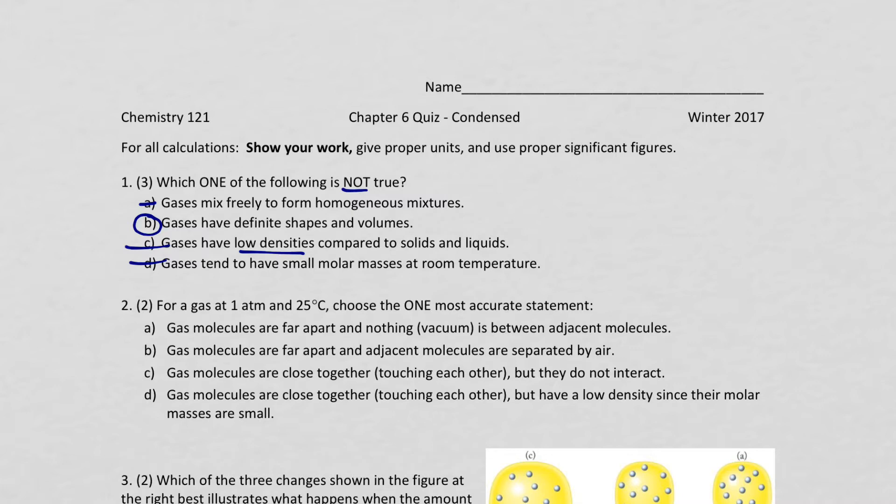And by the way, tend to have small molar masses. Well, if we look at H2 gas, that's a molar mass of about 2 grams per mole. So it's not too bad. So it's actually true. So we know that B is the answer.